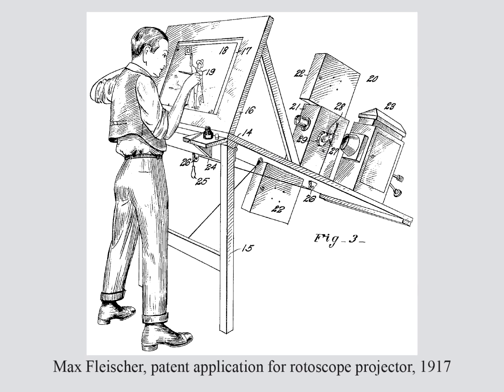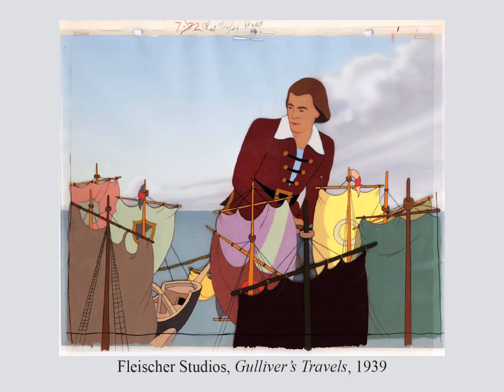To streamline the process of animation, Max Fleischer invented a technique called rotoscoping — simply tracing over live-action film shot with a real camera. Here's an illustration of Max Fleischer's patent application for a rotoscope projector: a projector shines onto a sheet of frosted glass, and celluloid is placed over the top so the artist can trace the image. This achieves greater realism, especially for human figures, and was used most famously for Gulliver's Travels. Disney Studios also used it exactly once for the figure of Snow White herself.